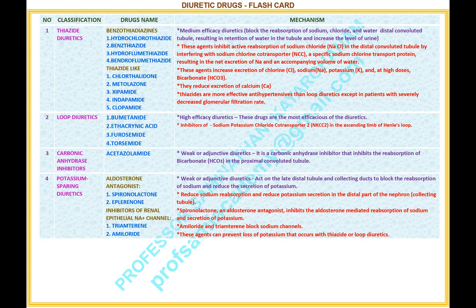Number 4. Name of the classification: potassium sparing diuretics. Drugs name under this classification — aldosterone antagonists: 1. Spironolactone, 2. Eplerenone. Inhibitors of renal epithelial sodium channel: 1. Triamterene, 2. Amiloride. Mechanism of potassium sparing diuretics. Weak or adjunctive diuretics. They act on the late distal tubule and collecting ducts to block the reabsorption of sodium and reduce the secretion of potassium. They reduce sodium reabsorption and reduce potassium secretion in the distal part of the nephron and collecting tubule. Spironolactone, an aldosterone antagonist, inhibits the aldosterone-mediated reabsorption of sodium and secretion of potassium. Amiloride and triamterene block sodium channels. These agents can prevent the loss of potassium that occurs with thiazide or loop diuretics.